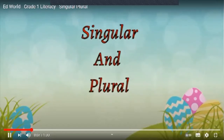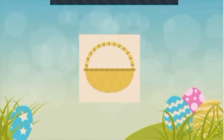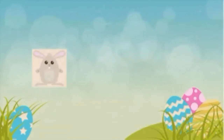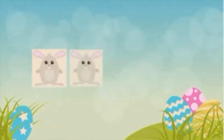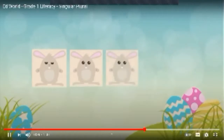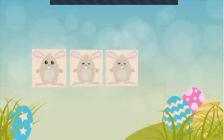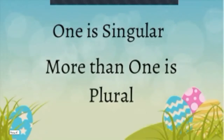What is singular and what is plural? Let's find out. One egg — it's a single egg. It's a singular. Basket full of eggs: 1, 2, 3, 4, 5, 6 eggs. It's a plural. A bunny — single bunny is a singular. It's a single bunny. 2 bunnies, 3 bunnies — 3 bunnies make it a plural. So, anything which is more than 1 is a plural. And 1 is singular.